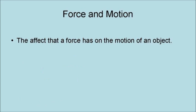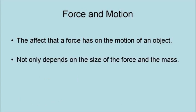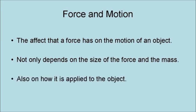The effect that a force has on the motion of an object not only depends on the size of the force and the mass, but also on how it is applied to the object. A force applied directly to the center of mass of an object results only in linear motion. A force applied a little off the center of mass results in linear motion and a slow rotation. A force applied more off the center of mass results in linear motion and a faster rotation.